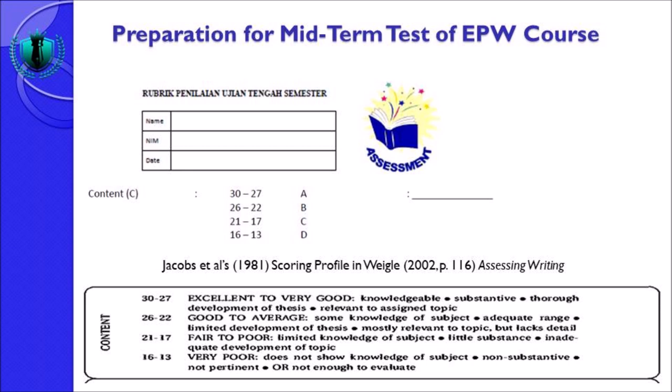Untuk mendapat nilai 27 sampai 30 anda harus berada pada range excellent to very good. Indikatornya: knowledgeable, substantive, thorough development of thesis, relevant to assigned topic. Anda harus tahu dengan topik yang anda bahas, substantive merujuk kepada isi, thorough development of thesis artinya pengembangan topic sentence-nya bagus, dan relevant to assigned topic berarti berkaitan dengan topik yang ditulis.